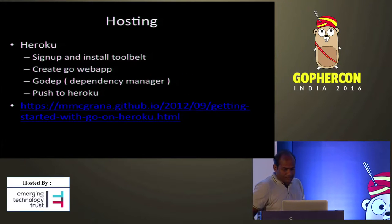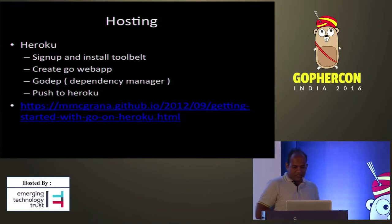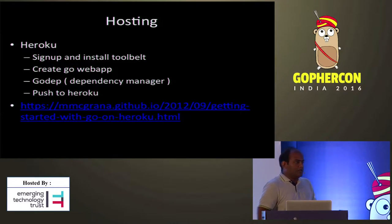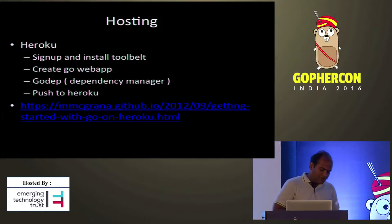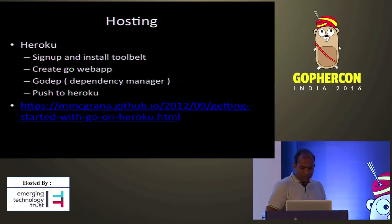The next thing is how do you host it. There are many options — I chose Heroku because it was free and easy. You just sign up and install the Toolbelt. You create a Go web app. godep is used for dependency management: when working on a standalone machine, you get dependencies using go get and build your binary. However, when you want to deploy, you use godep, which bundles all the dependencies together and keeps them in a folder. Then just push to Heroku.